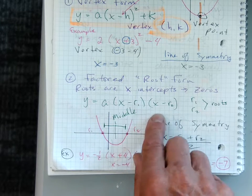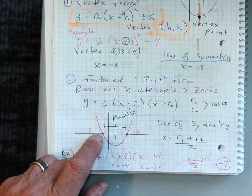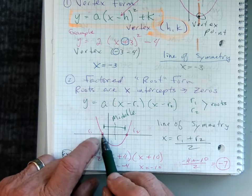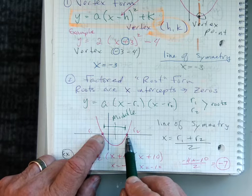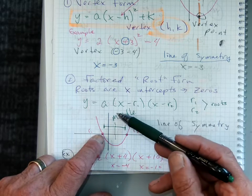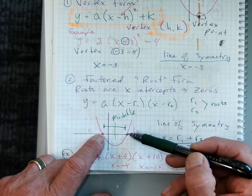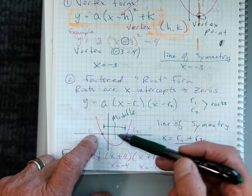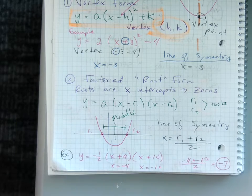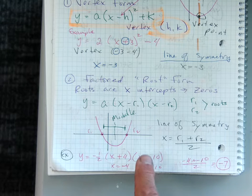So if we graph our roots, whatever the numbers may be, I've got a number here and a number here, then the line of symmetry has to go through the middle of the graph. So it would be directly, exactly in the middle of the two roots.